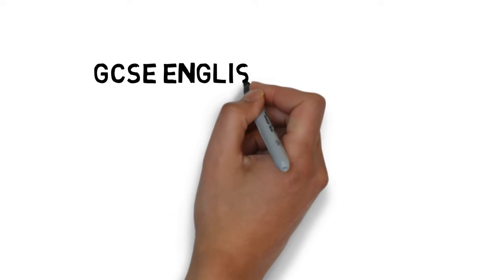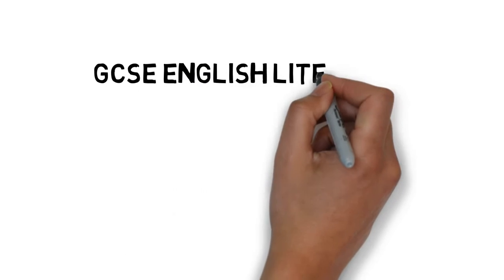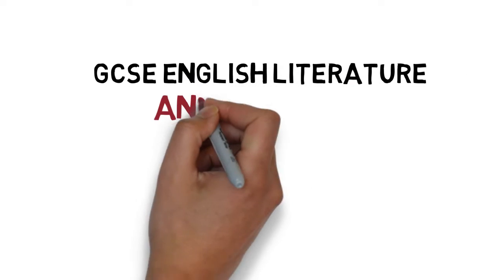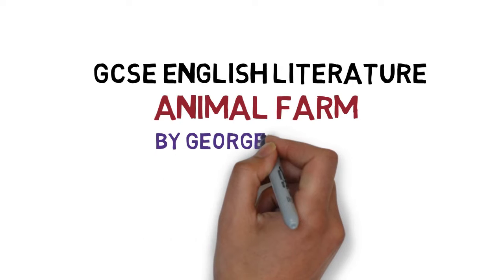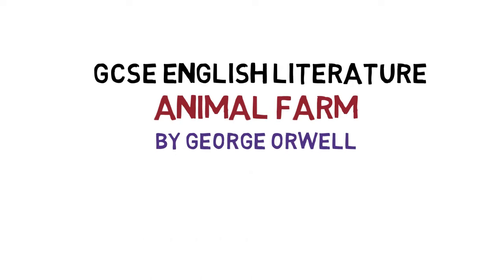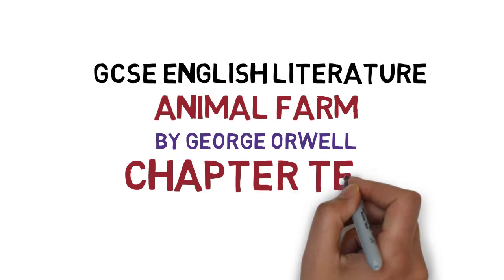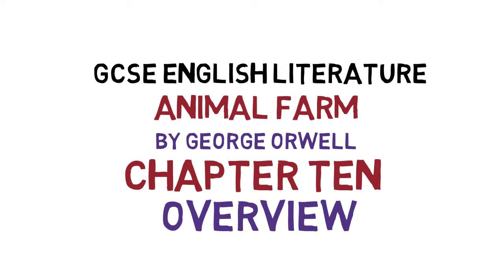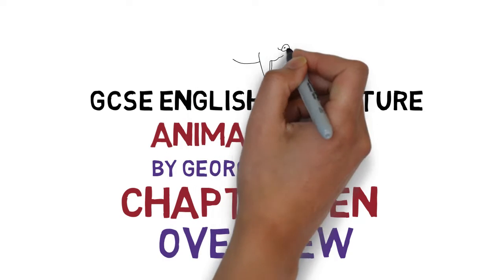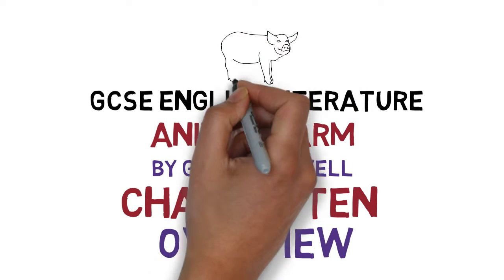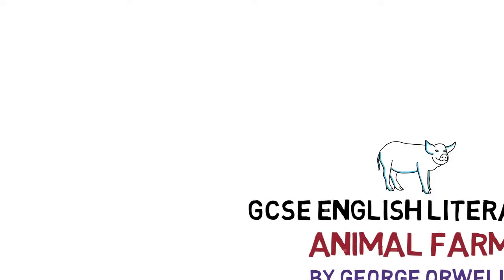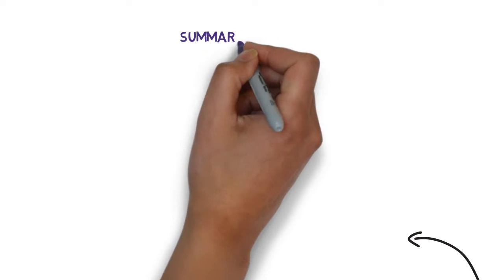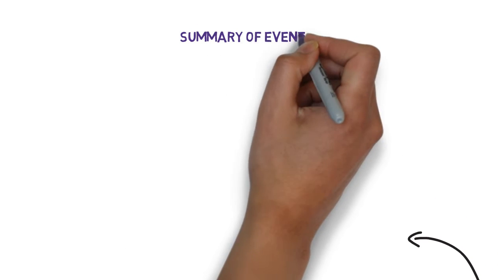Hi, this is a revision video for GCSE English Literature. We're looking at Animal Farm by George Orwell, and this video gives an overview of the final chapter, chapter 10. By overview, I mean a summary of events, a look at key characters, and some analysis of important quotations. If you just need an overview of the chapter, I cover that first. So let's move over here to give a summary of events.